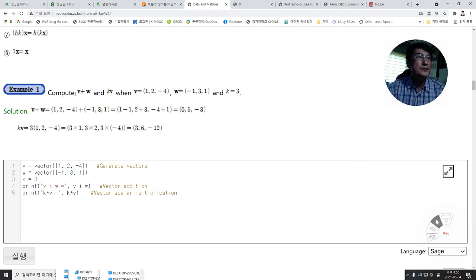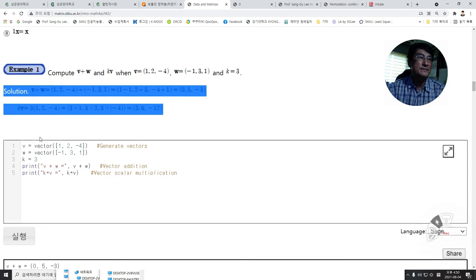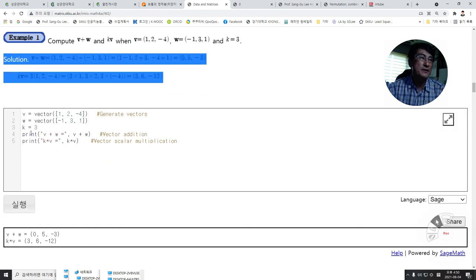Computation. Compute the addition of two vectors or scalar multiplication when we have V and W and scalar k equals 3. Easy computation shows the result like this, and we can do those computations with code.